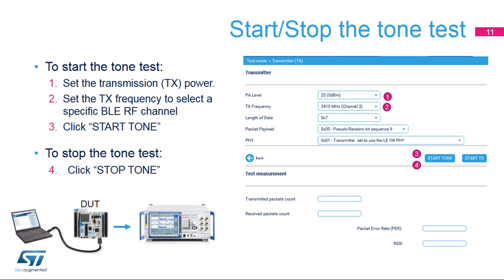The tone test can be used with measurement equipment to verify the transmission level of the device or to verify the frequency accuracy. To start a tone test, set the tone parameters — transmission power or PA level, and frequency — then click Start Tone. The board is configured to transmit a continuous tone and the button changes to Stop Tone. To stop the test, click Stop Tone.